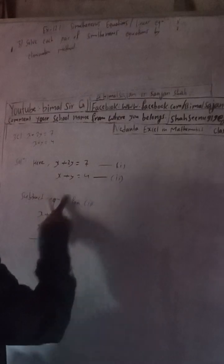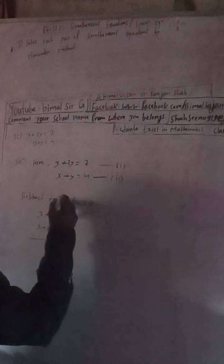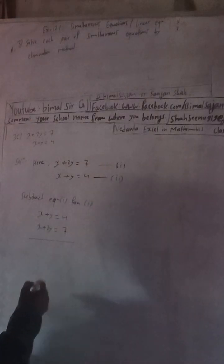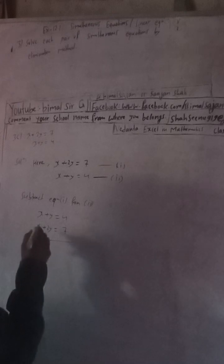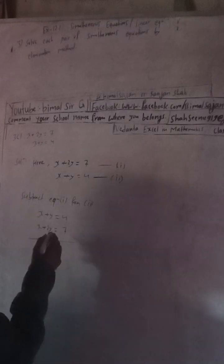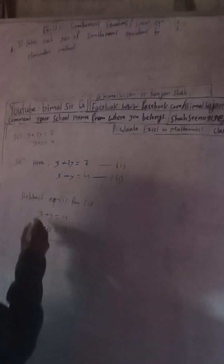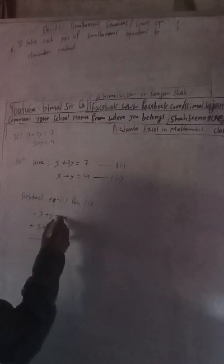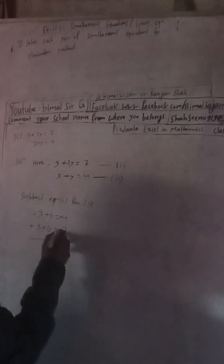Here is equation 1. Subtract equation 1 from 2. Now we have to identify what the signs are. There is no sign shown, which means plus. No sign means plus. No sign means plus. No sign means plus.